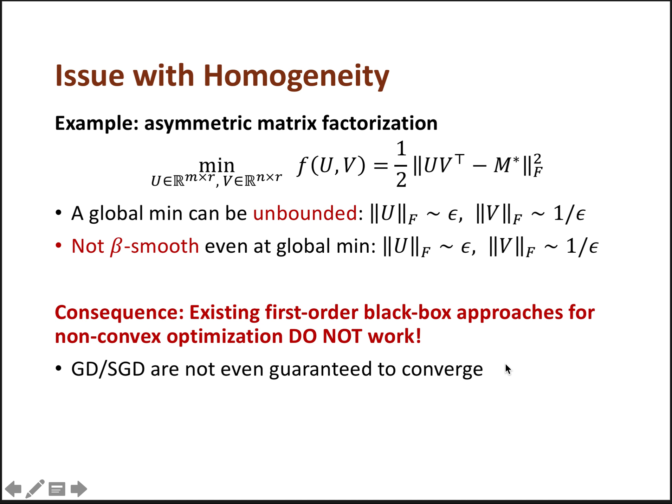A direct consequence is that existing first-order black-box approaches for non-convex optimization do not work on this problem, because algorithms like gradient descent or stochastic gradient descent are not even guaranteed to converge when you have possible unboundedness or non-smoothness in the function. Similar issue was also raised recently by Oha Shamir.